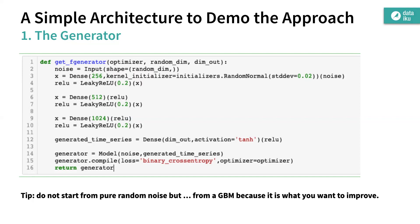If you initialize with random noise, the network would probably converge but only after thousands of epochs. Instead, we start with a GBM — we deliberately tell the GAN it needs to do better than the GBM.